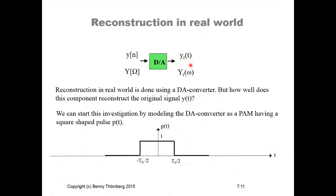We model the reconstruction process again, but now as a D-to-A converter. The input signal in the time domain is Y(n), and the output reconstructed signal is Y_R(t), viewable also in the frequency domain. We model the D-to-A converter as a pulse amplitude modulator (PAM) having a square-shaped pulse P(t).